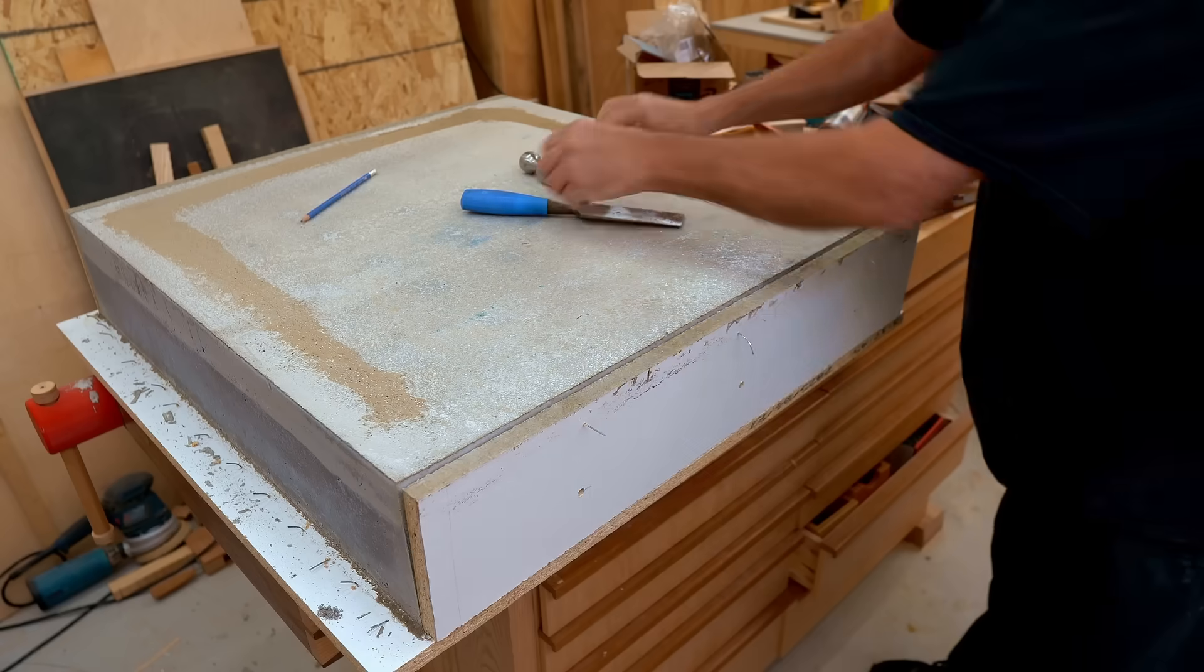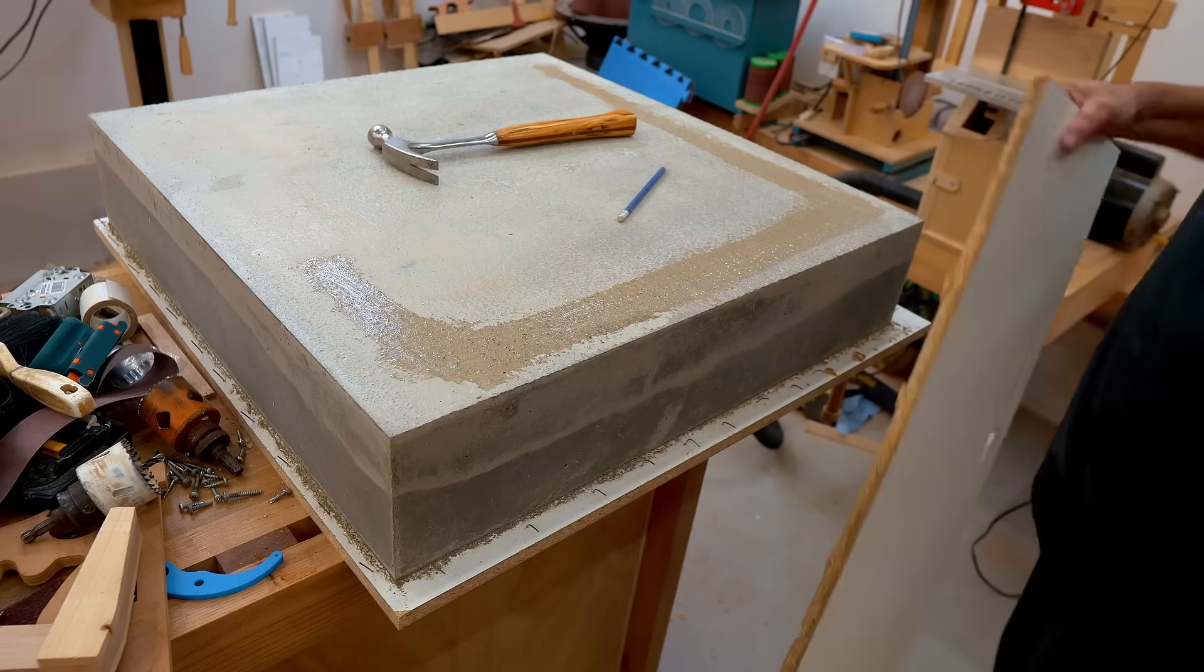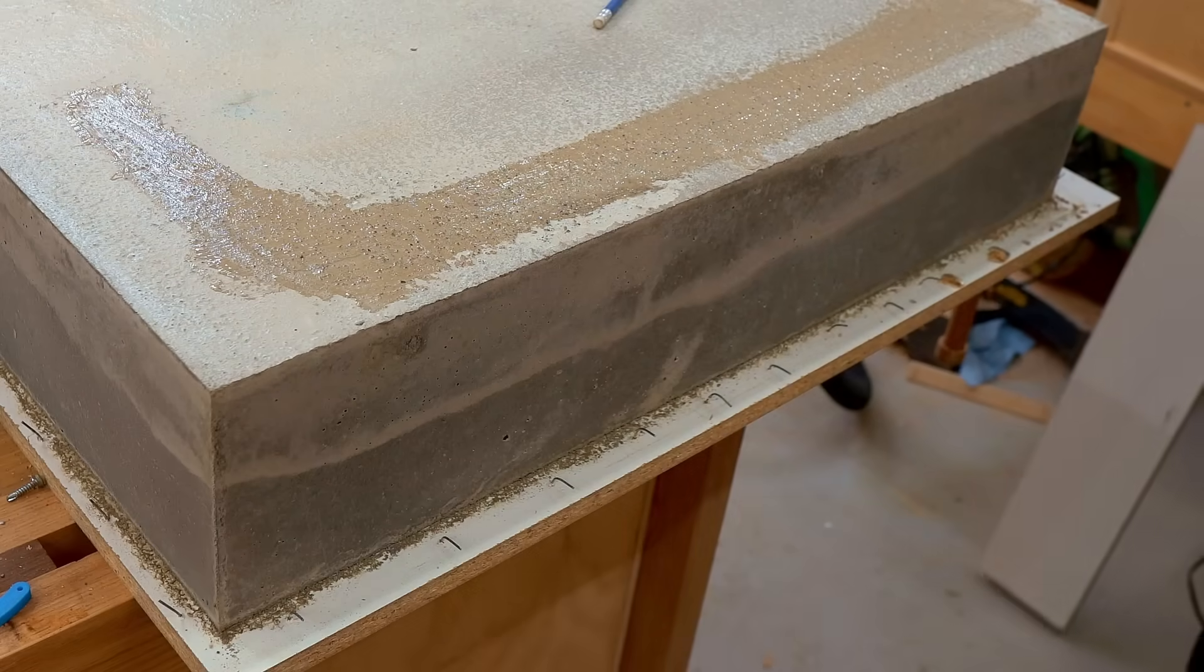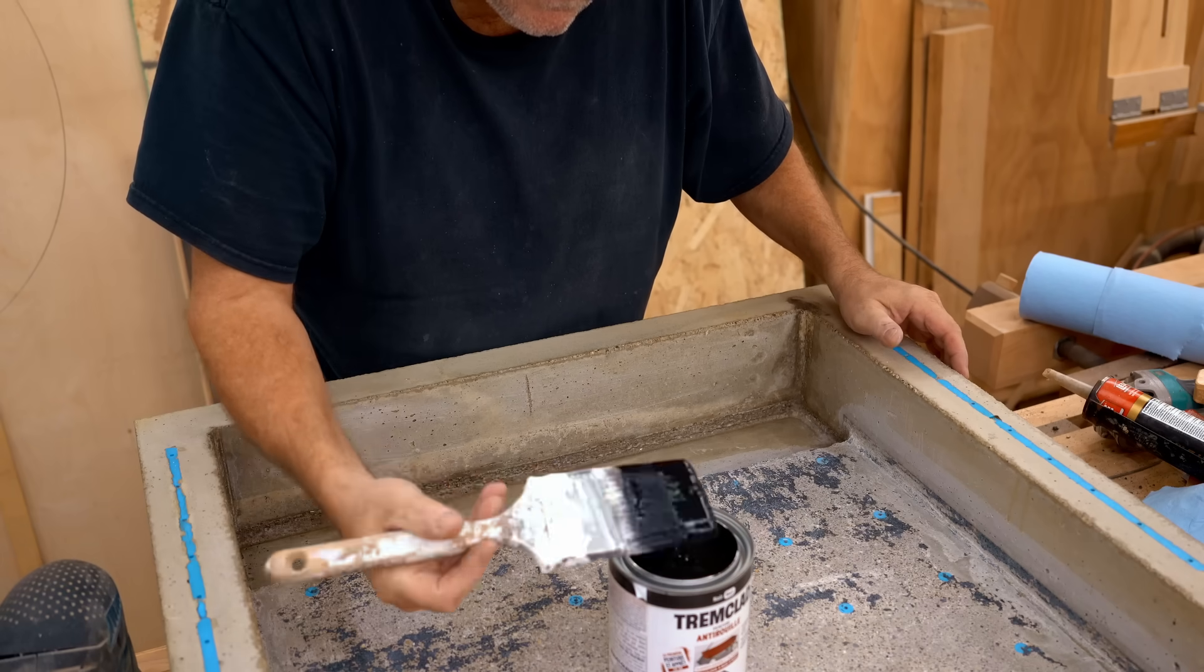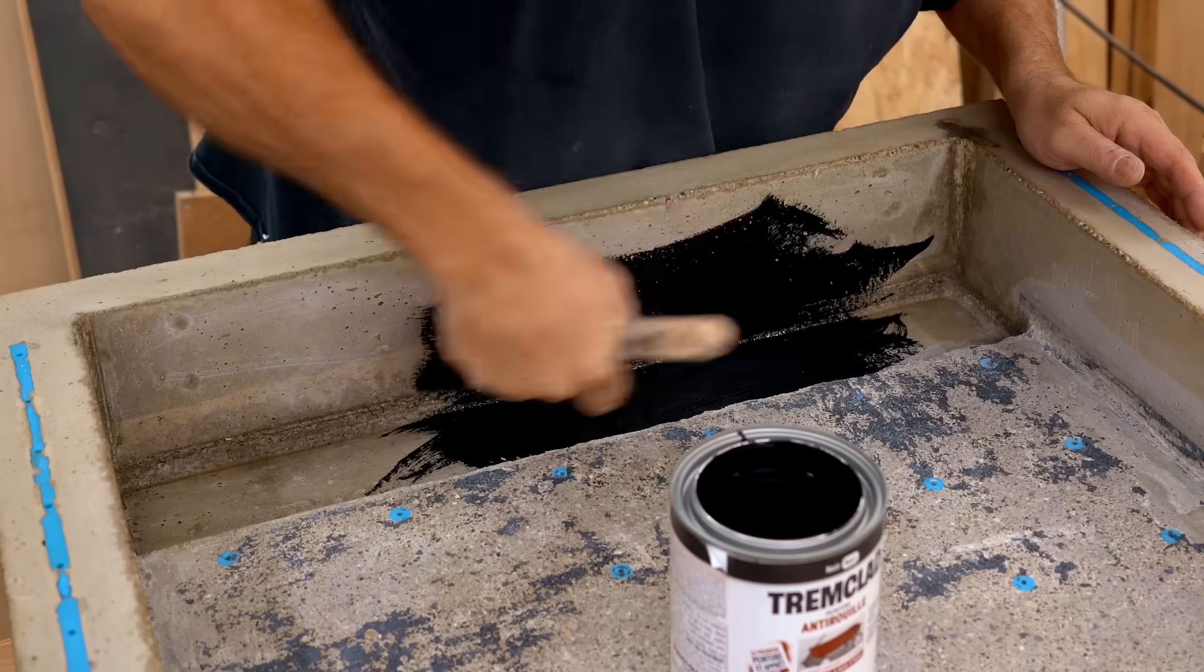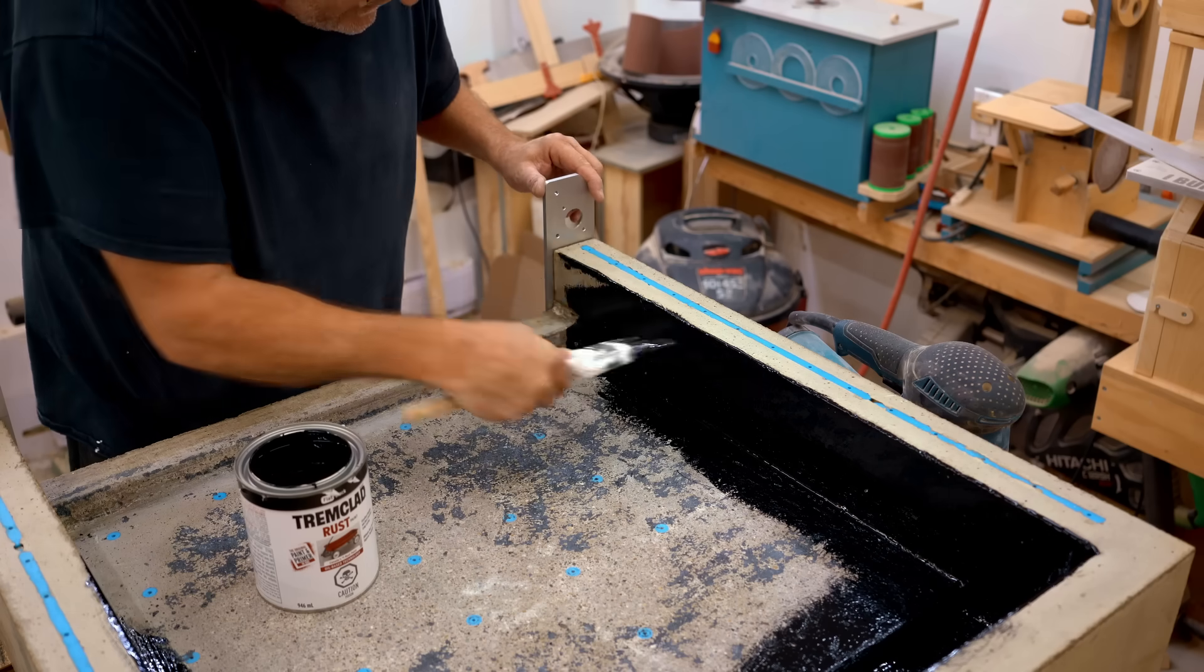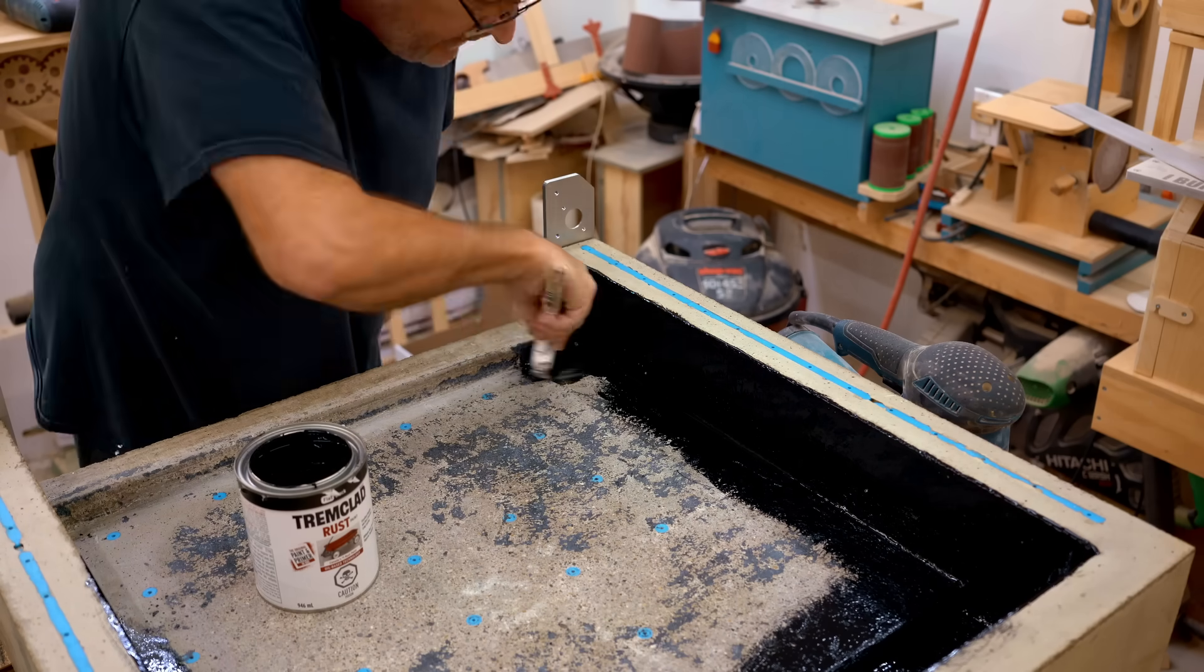In part two of this series I stripped off the formwork from the concrete base I made for the new CNC, and in this one I'm going to start by painting the inside of the base. That'll help seal the concrete and also hide my big mistake with the resin that foamed up that I had to pull out.